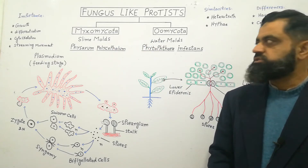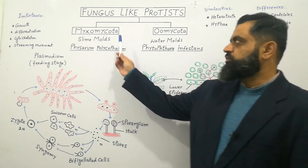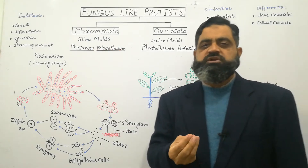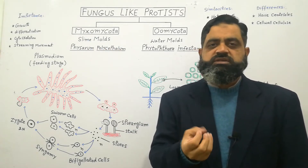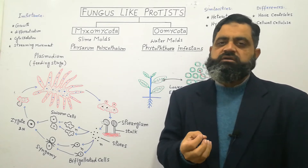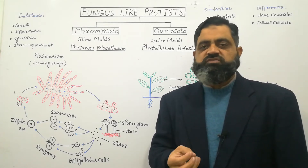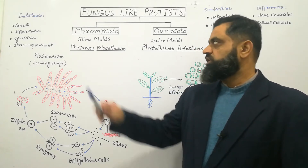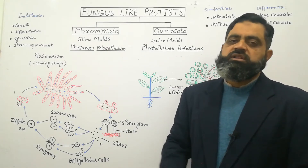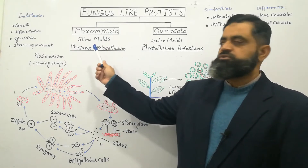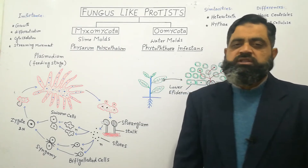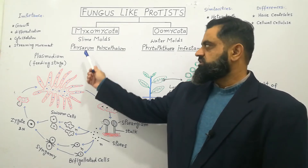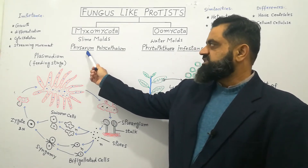First, we are going to discuss Myxomycota. 'Myxo' means slime — a substance that is very sticky in appearance — and 'mycota' means fungus, a fungus-like organism. That is why we call them Myxomycota. The other name for Myxomycota is slime molds. The best example we are going to study today is Physarum polycephalum.